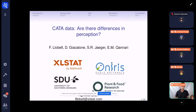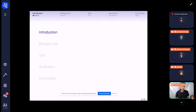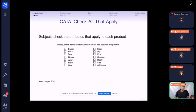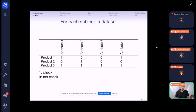The topic of my talk is to answer the following question: Are there differences in perception between two groups of subjects in the case of check-all-that-apply data? As an introduction, I remind you that check-all-that-apply is a simple task where subjects just have to check the attributes that apply to each of the products. So for a subject, we have a binary dataset with a one if the attribute has been checked for the corresponding product and zero if not.